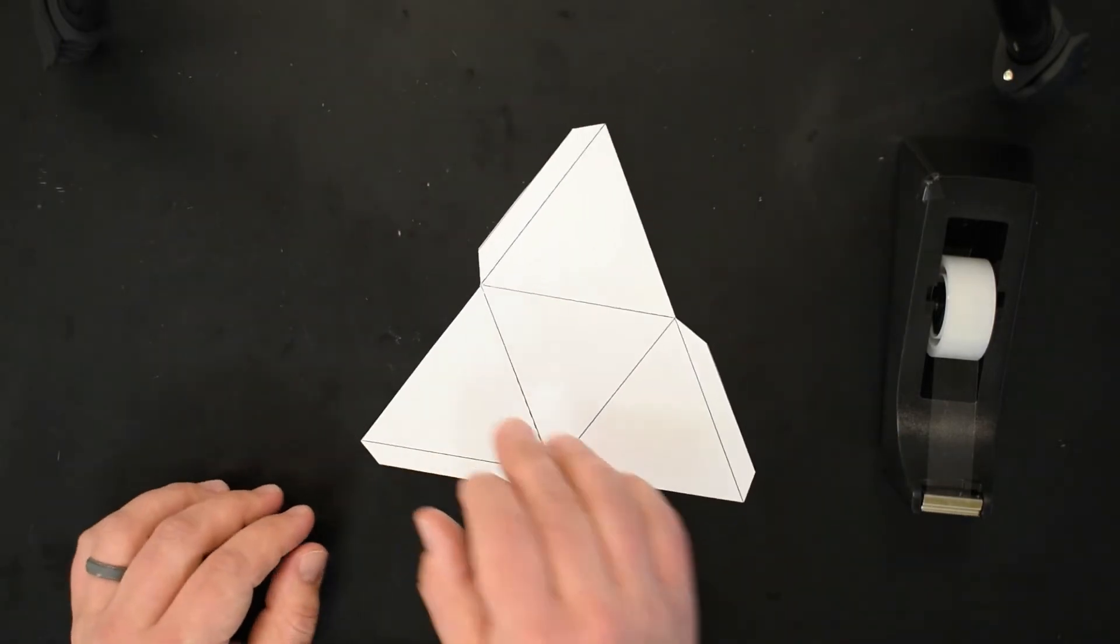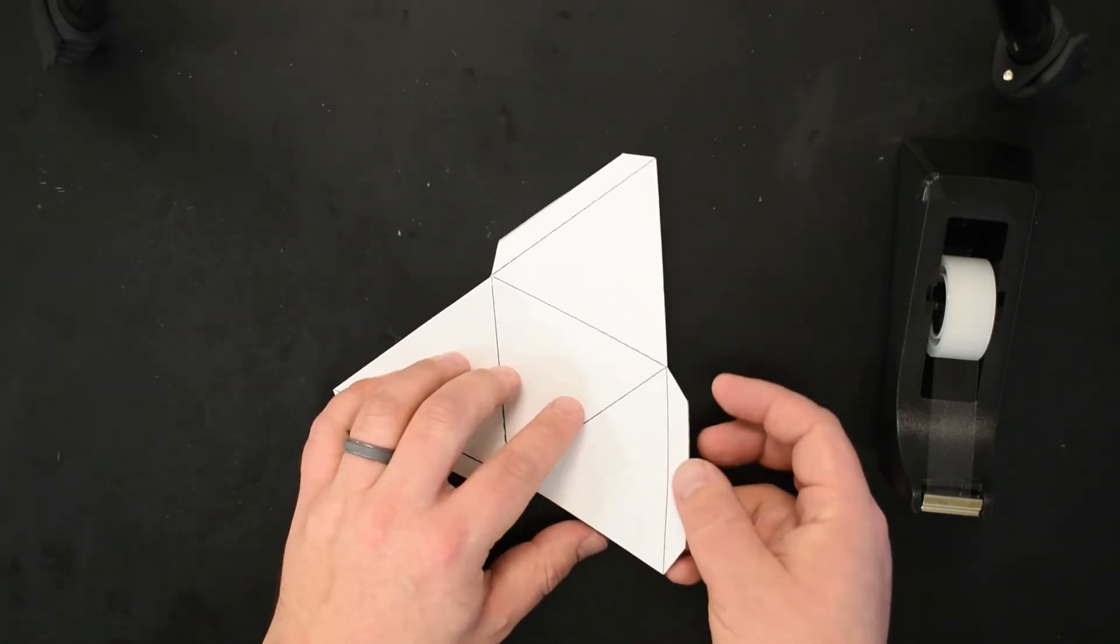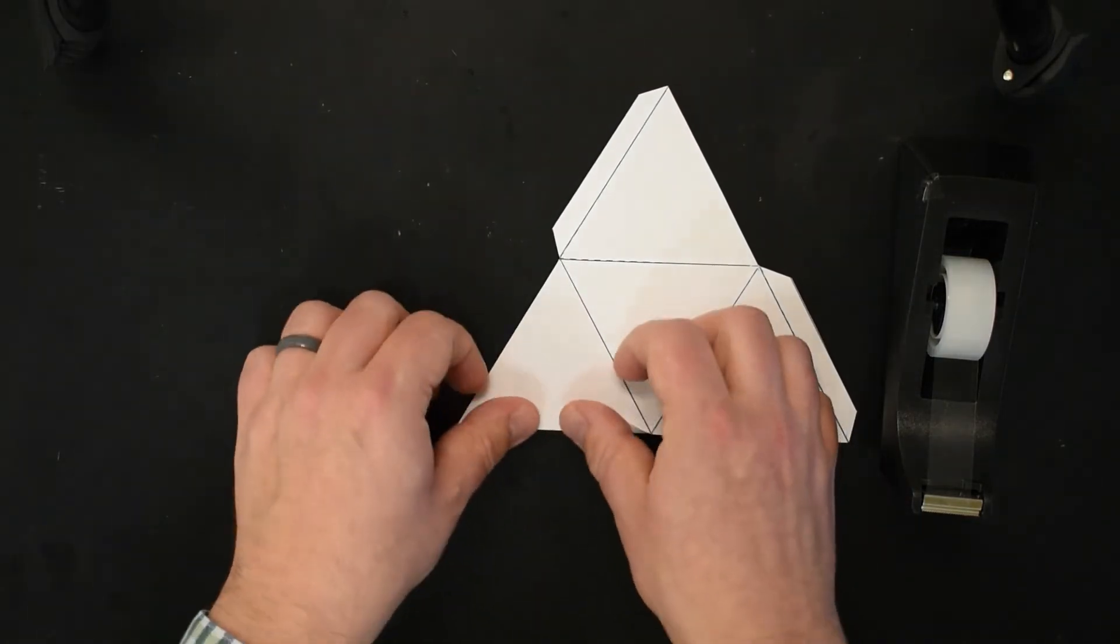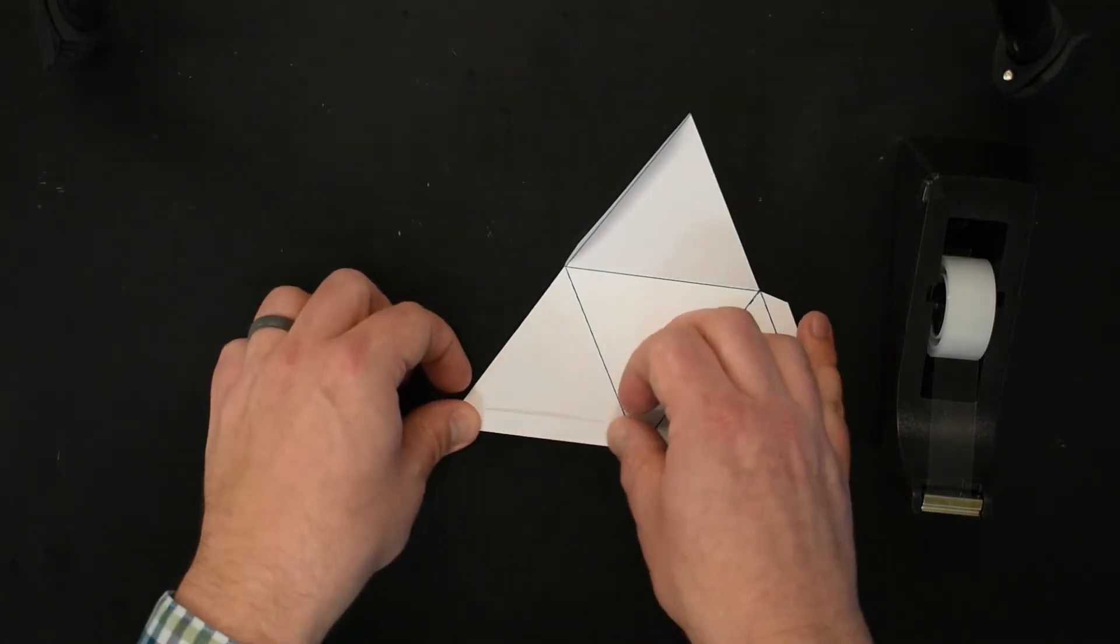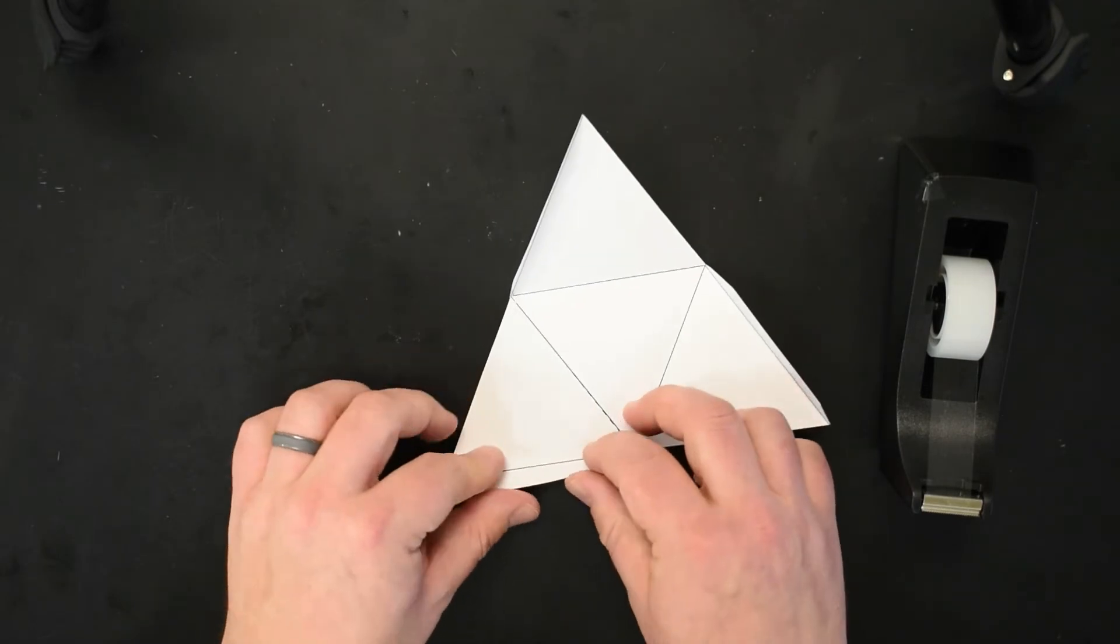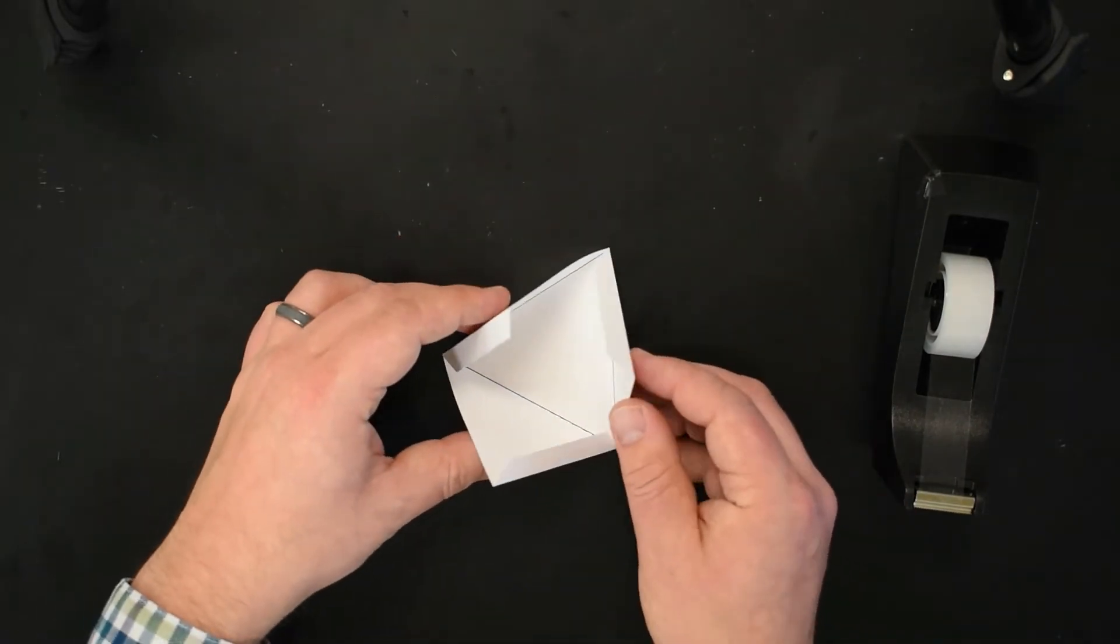To start assembling it, first we're going to fold it. All of these crease marks that we've made work really nicely. This is thicker paper, and if we didn't score it, we would not get such a crisp fold.